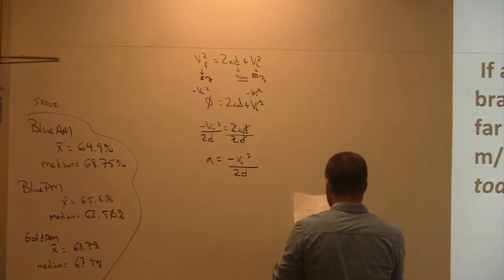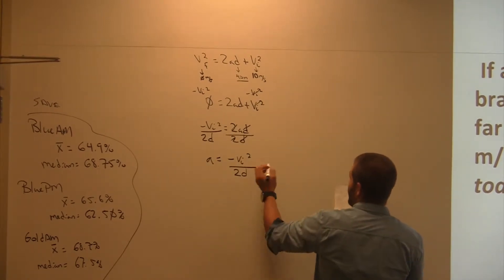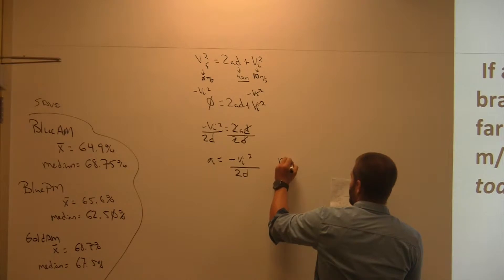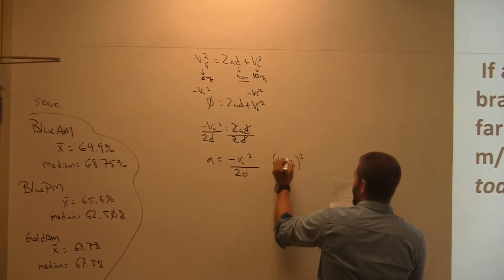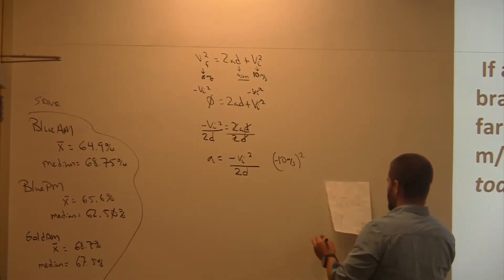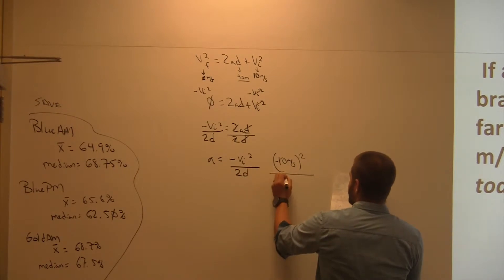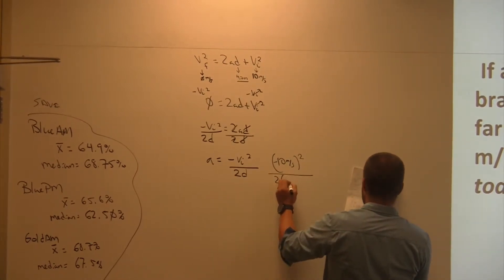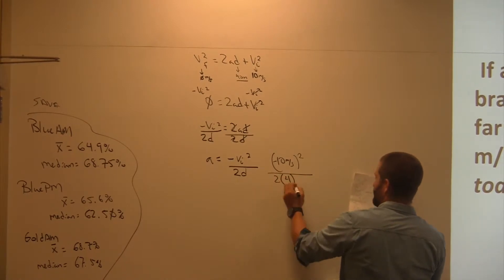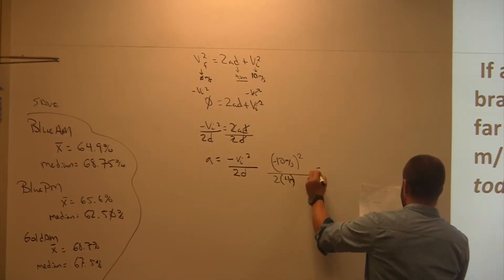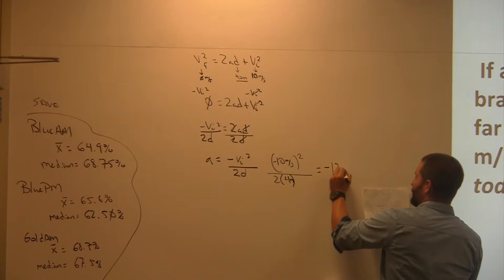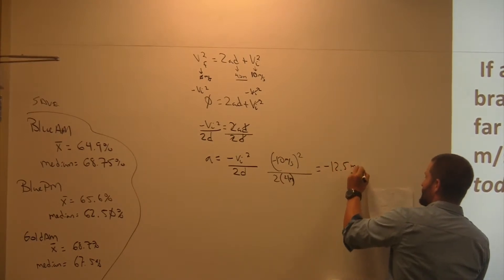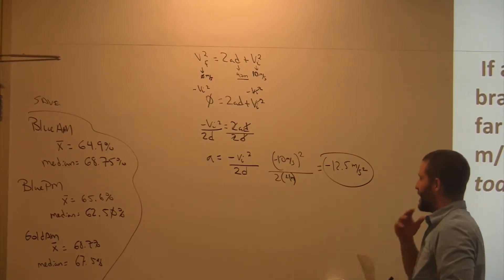So now I plug and chug. So my initial velocity is 10 meters per second squared. That's a negative, right? Divide by 2 times 4. Everybody with me on that? That's going to give me negative 12.5 meters per second squared. That is my acceleration.